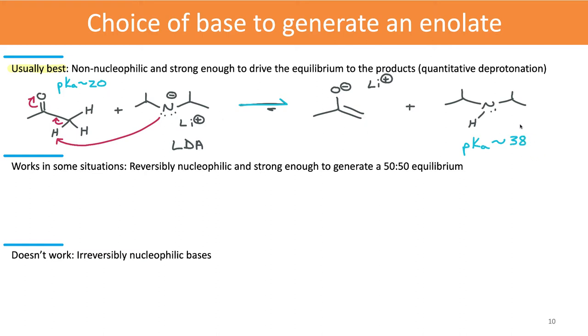Seeing that pKa difference and seeing that the weaker acid is on the right-hand side, we know that equilibrium is going to drive over to the product side. So that's where we get the idea that this is usually a very consistent, very predictable, reliable way to generate an enolate - a strong non-nucleophilic base.